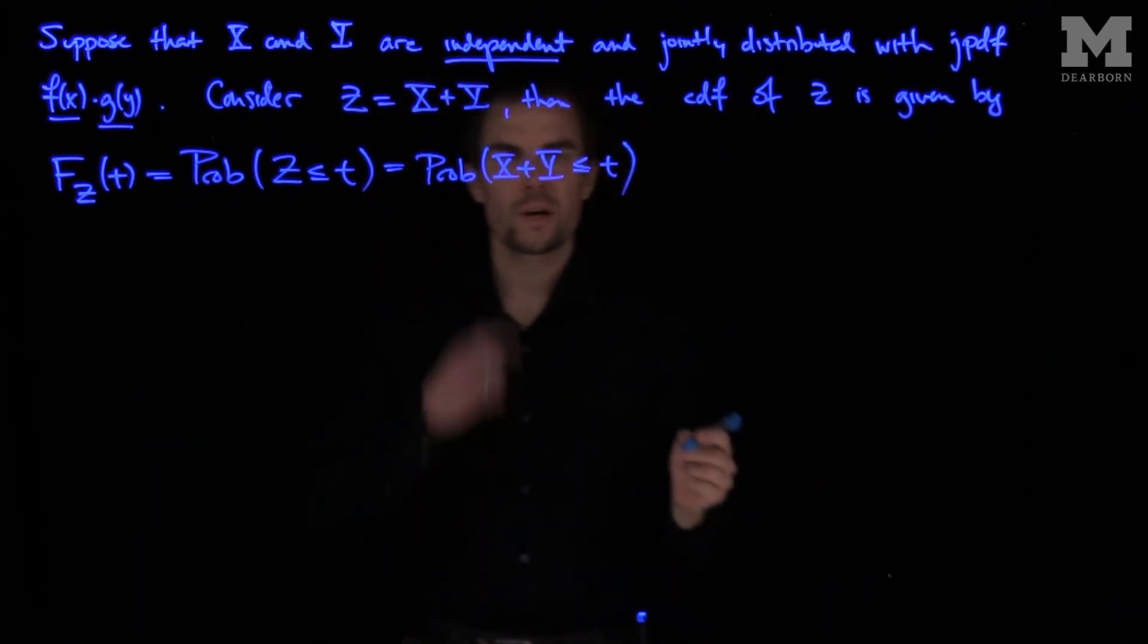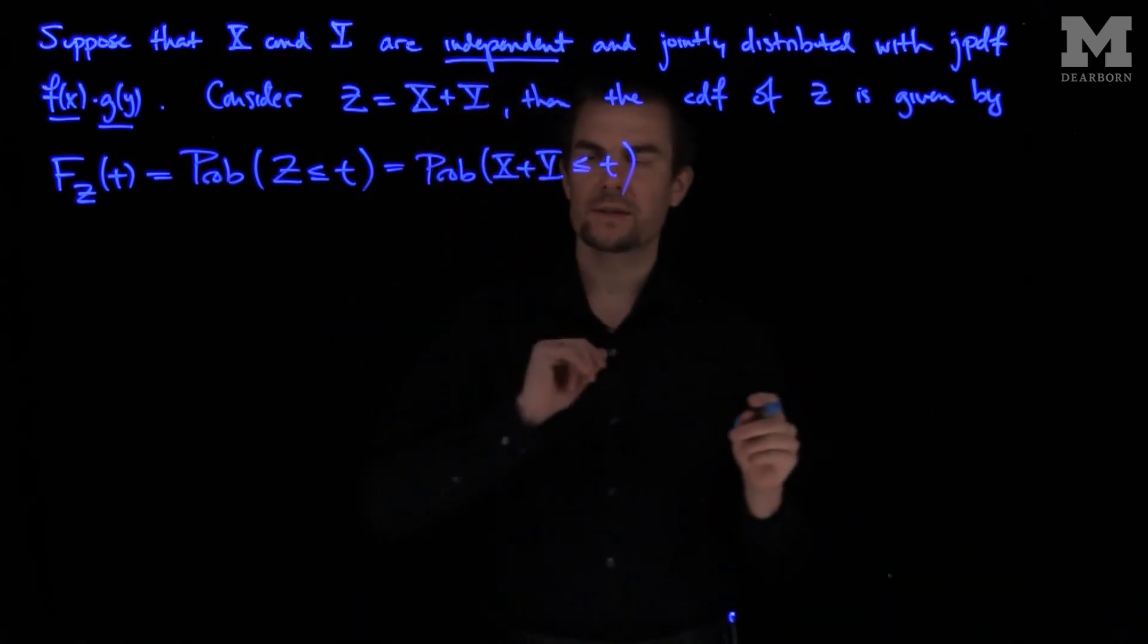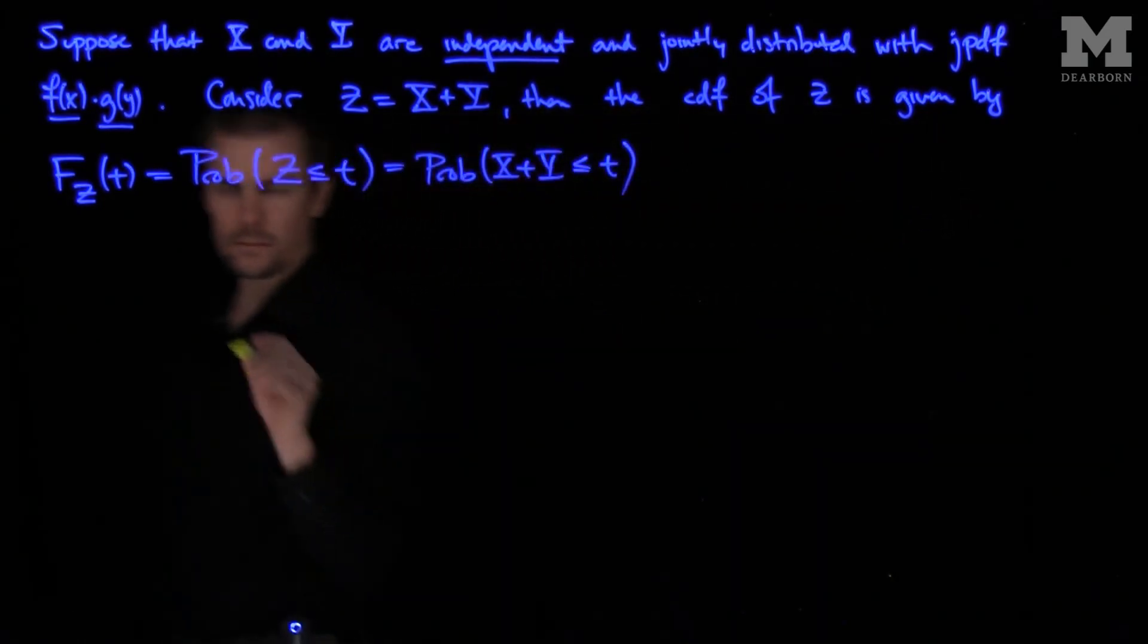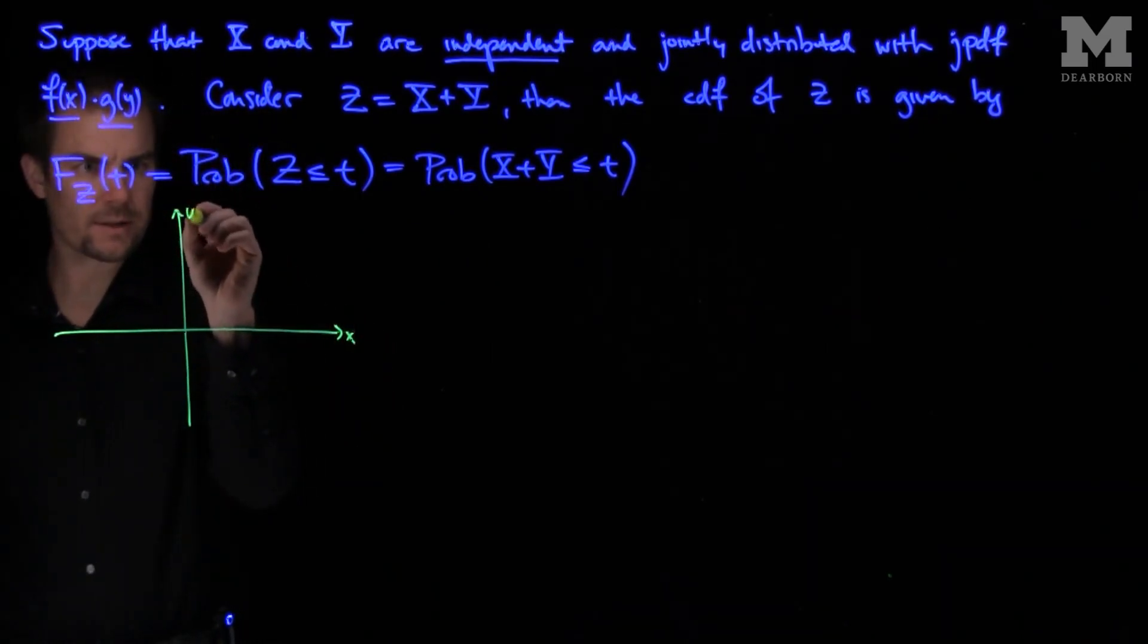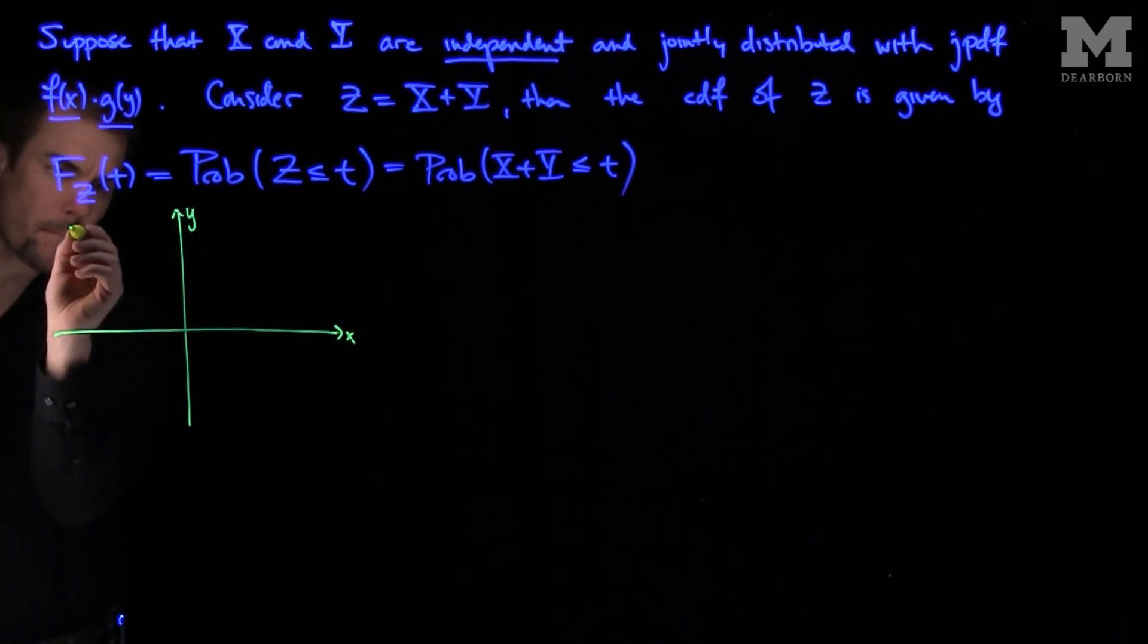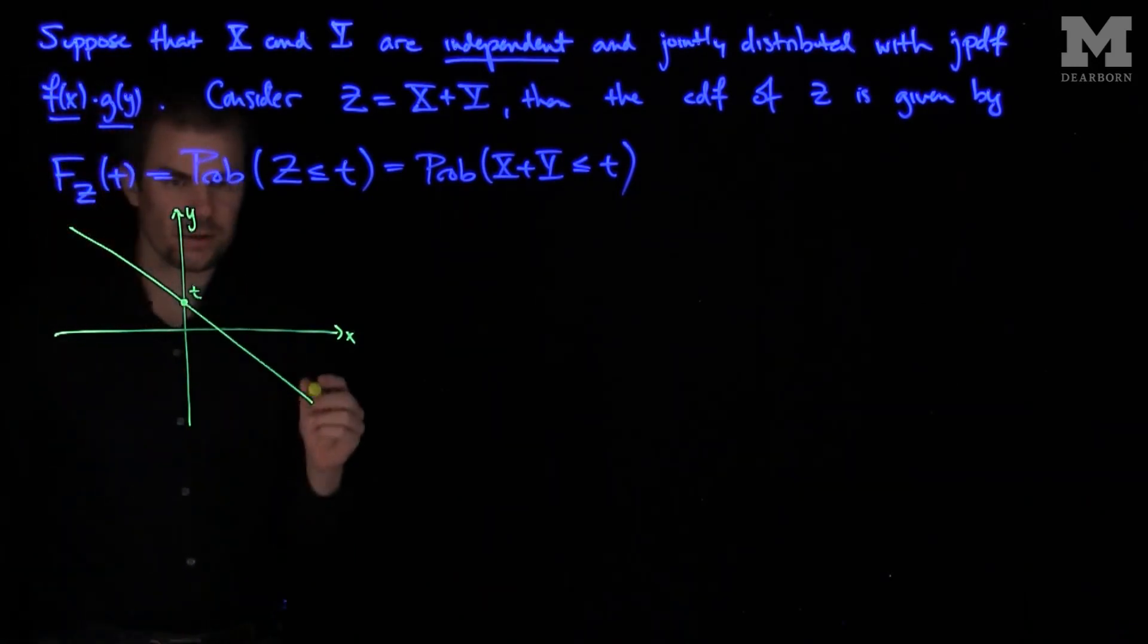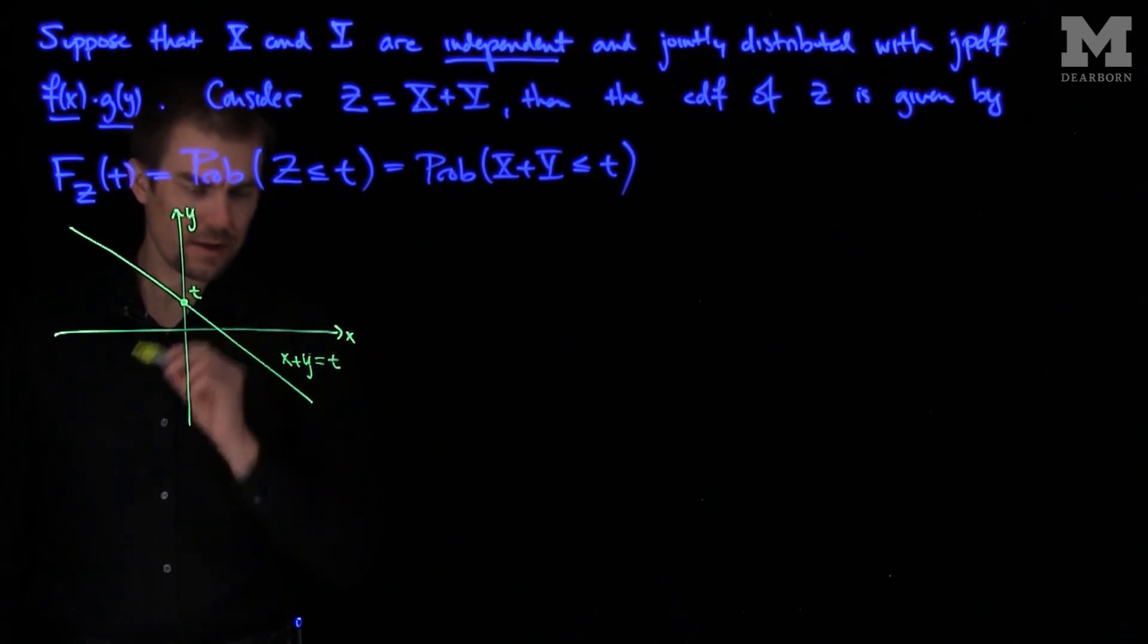And what we'll do is we can look at this equation and say what region is this in the xy plane. So now we'll draw the xy plane and sketch this region. Here's my x axis and here's my y axis. Then X plus Y equals t is a line whose slope is negative 1 and whose intercept is t. So this is the line X plus Y equals t.